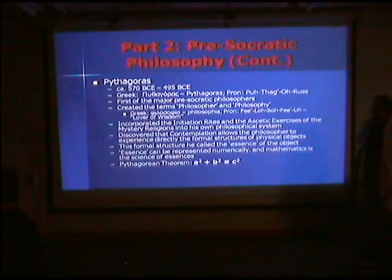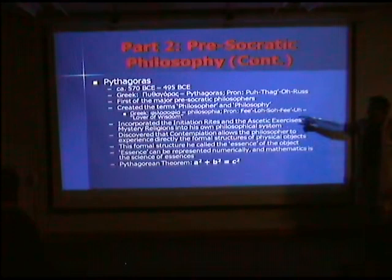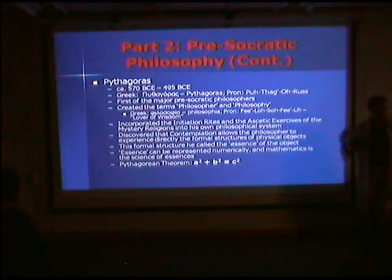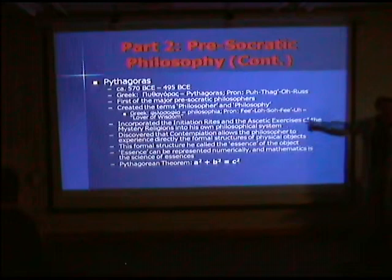Pythagoras lived 570 BCE to 495 BCE. He was the first of the major pre-Socratic philosophers and actually the one who created the terms 'philosopher' and 'philosophy.' Greek philosophia means 'lover of wisdom' — someone who contemplates the world around them. He incorporated the initiation rites and ascetic exercises of the mystery religions into his own philosophical system, and it is this system, combined with the Eleusinian mysteries, that would be taught to Socrates, Plato, and Aristotle, and then comes through them to us through Western philosophy.